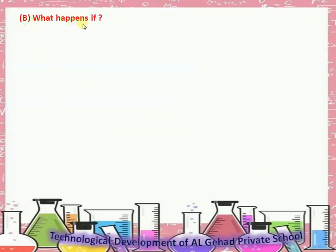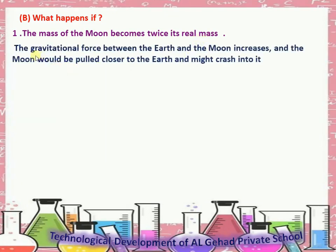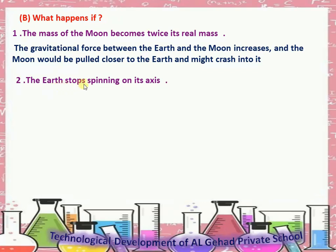What happens if the mass of the moon becomes twice its real mass? The gravitational force between the earth and the moon increases, and the moon will be pulled closer to the earth and might crash into it. Number 2: If the earth stops spinning on its axis, the phenomenon of day and night will not happen.